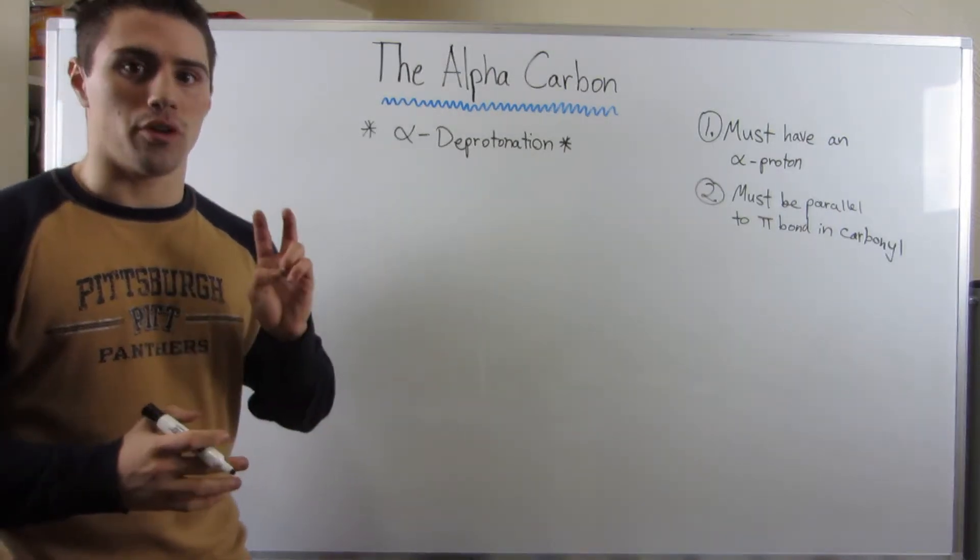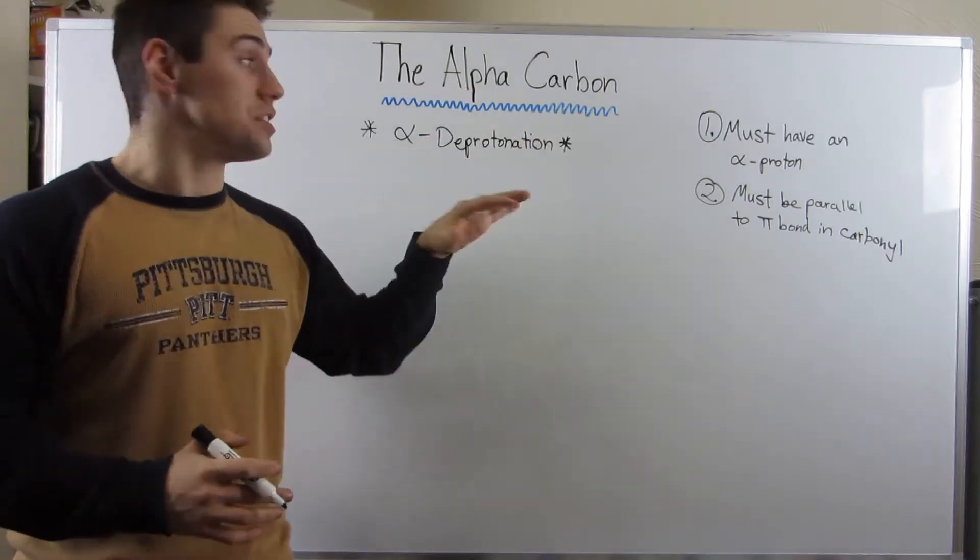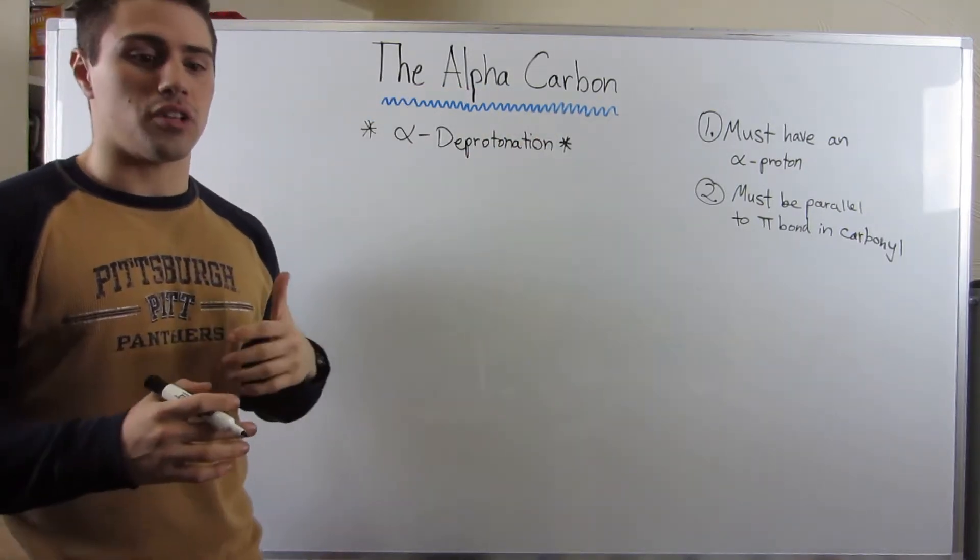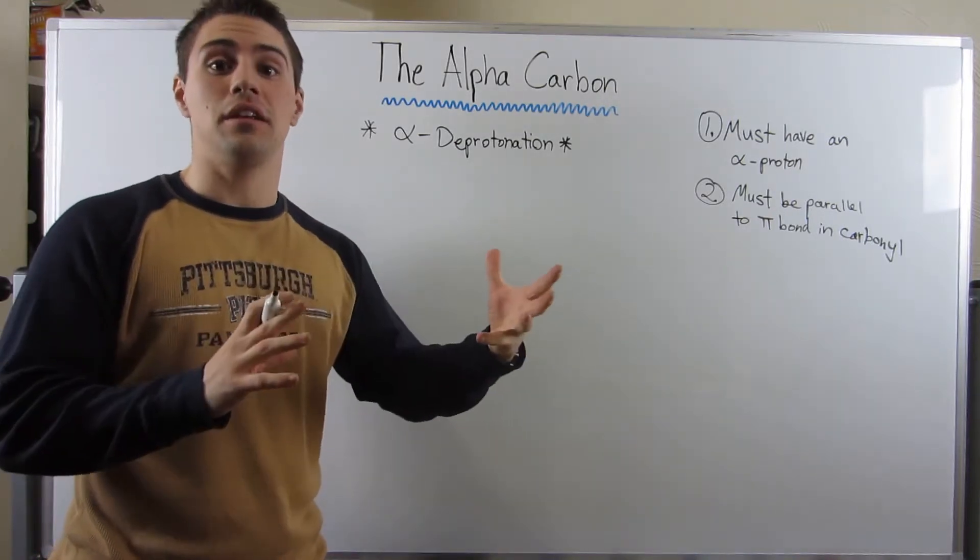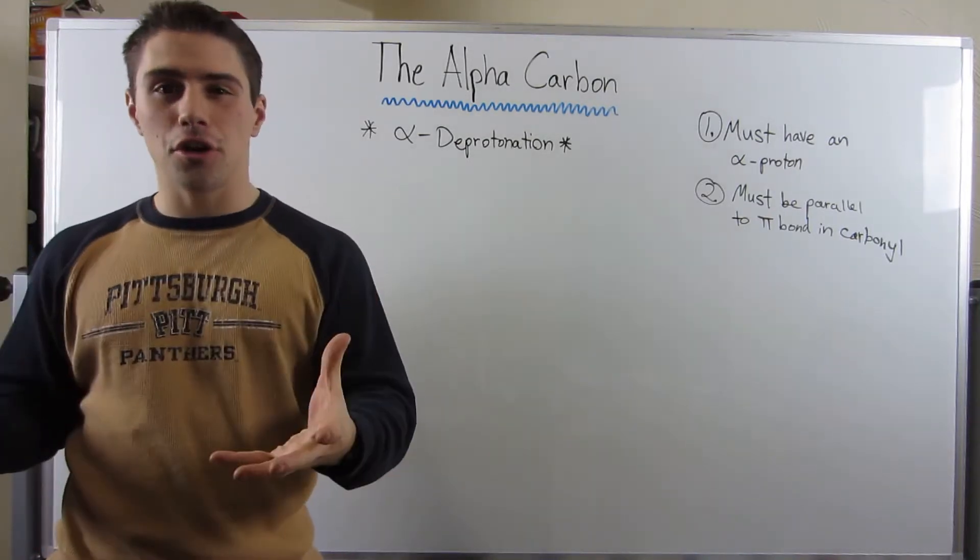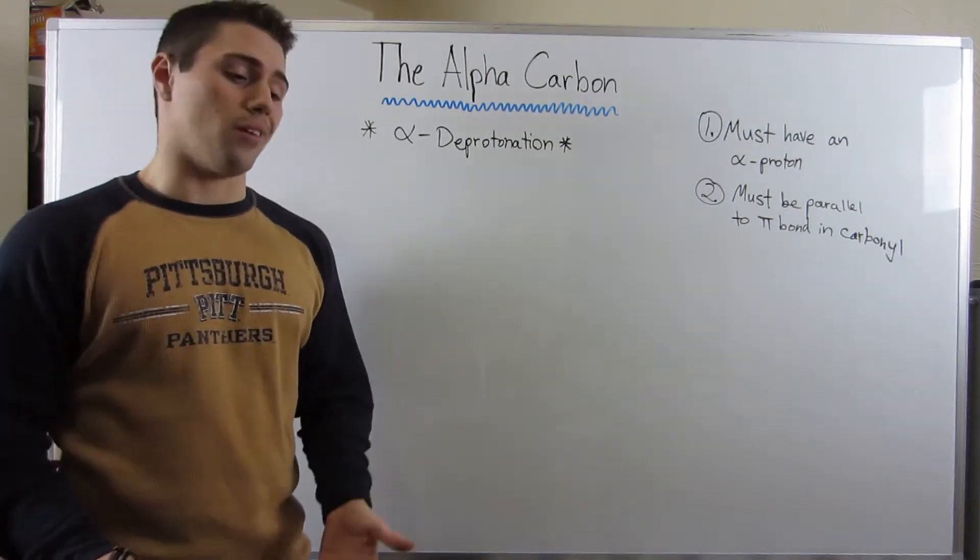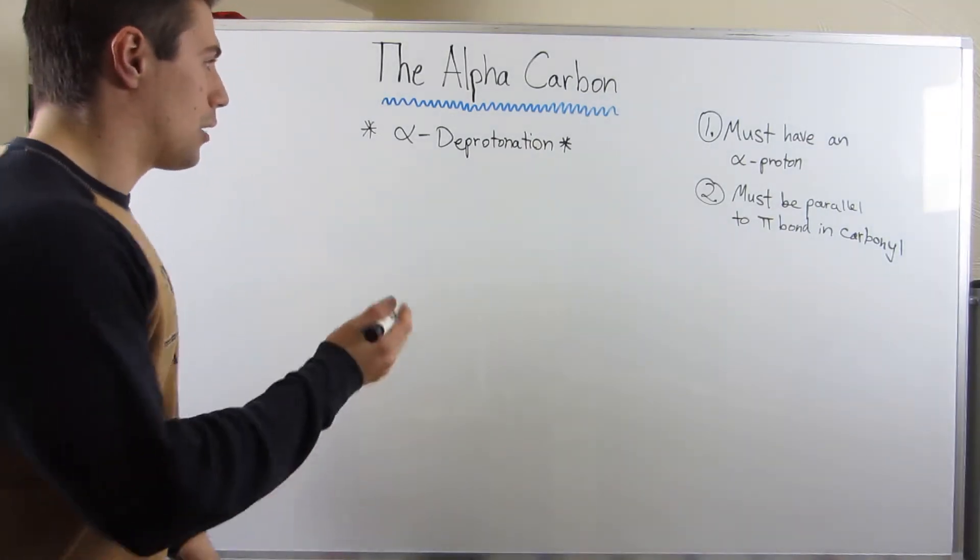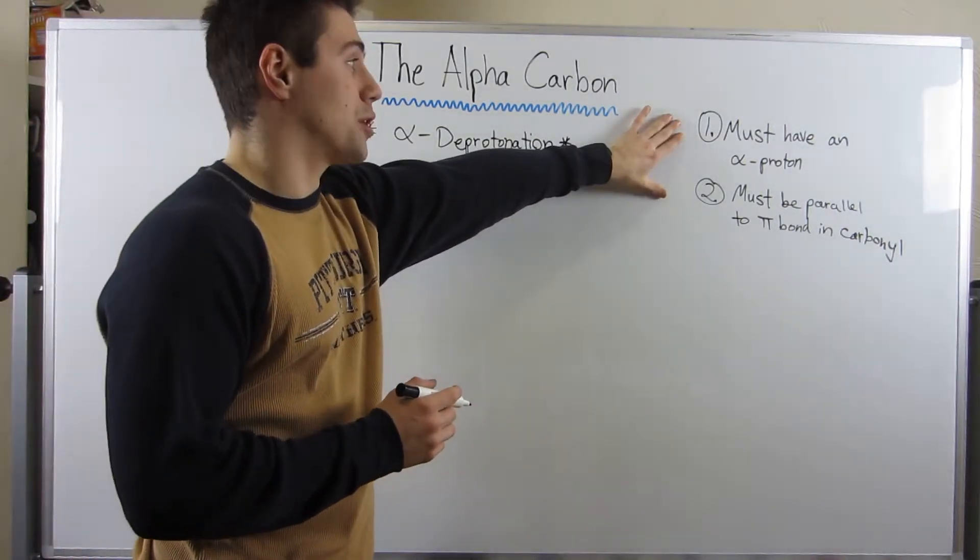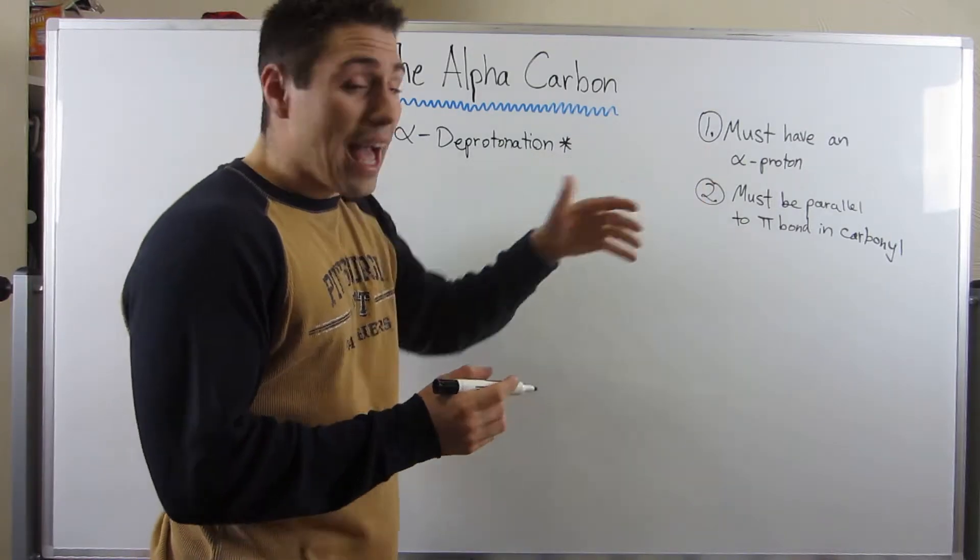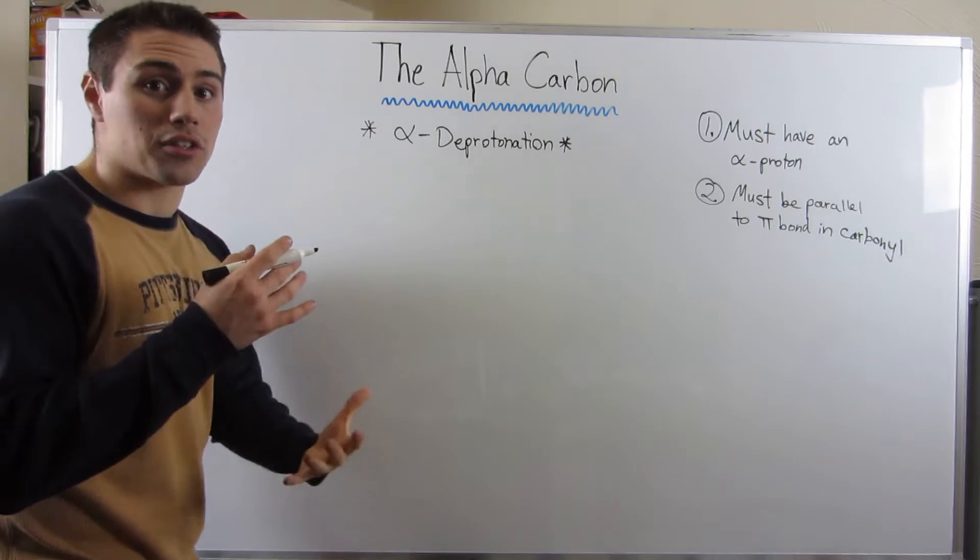Okay, gang, so before we call it quits on this video, I just want to go over two examples of things that could possibly go wrong with alpha deprotonation. These are more like, someone's going to give you a problem on an exam, and say, oh, given this environment, alpha deprotonation doesn't occur, why is that the case? Please explain. And then you're going to be like, oh, I got this, I know how to explain it. Okay, so here are the two conditions you must meet for alpha deprotonation. First of all, you have to have an alpha proton.